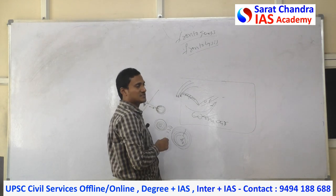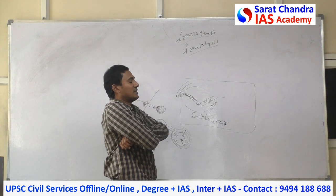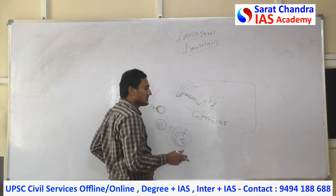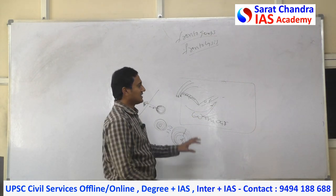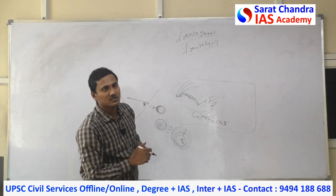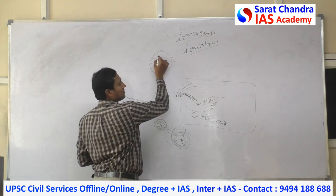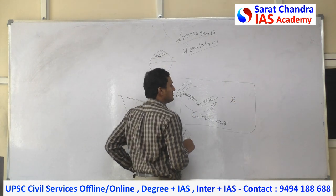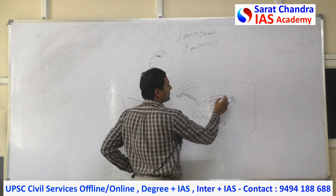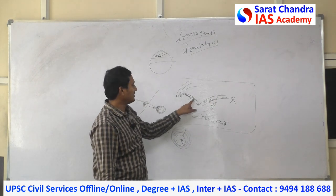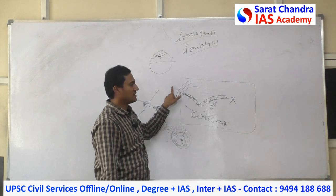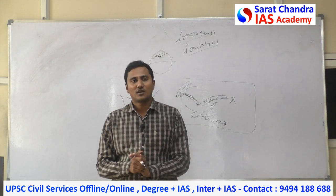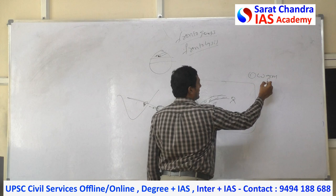In a temperate cyclone, four different types of weather are observed as it passes. Since temperate cyclones move from west to east, if you are standing at a point, first the warm front arrives, then the warm sector, then the cold front, and finally the cold sector. This is a very important topic in the entire cyclone chapter. Let us now see what weather conditions correspond to each of these four parts.